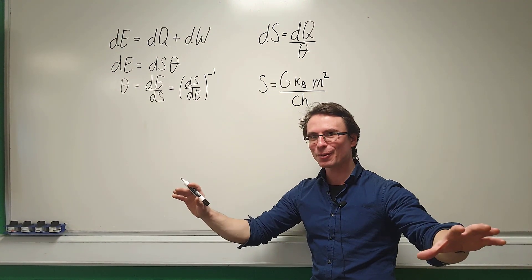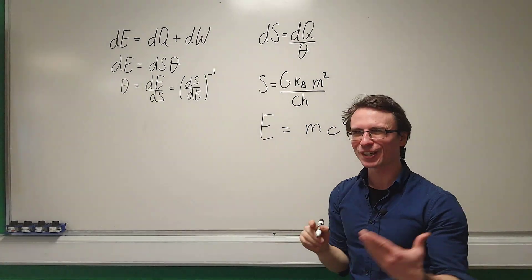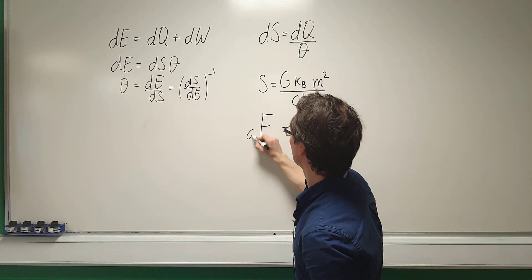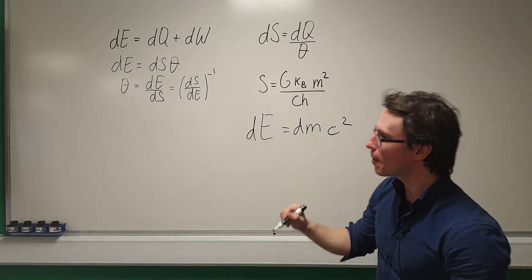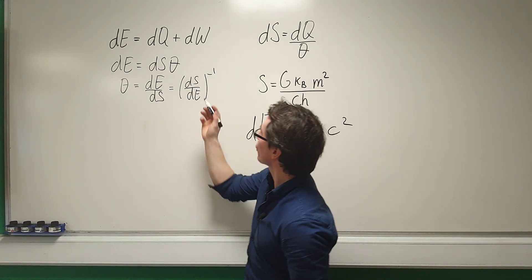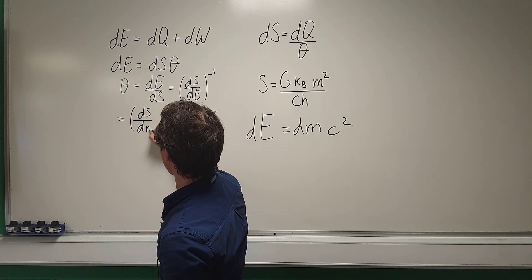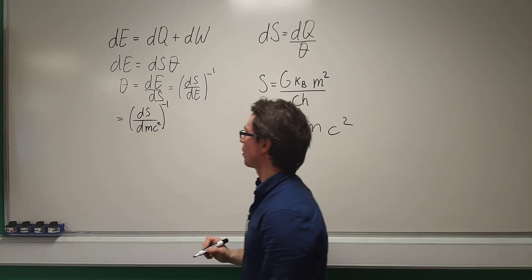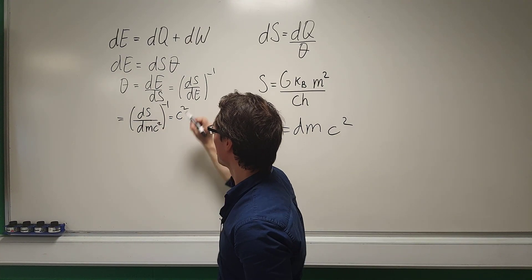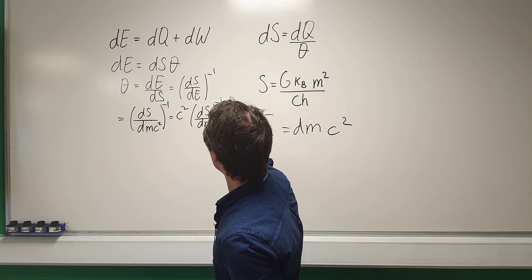Let's use E = mc². I'm going to apply this for a little infinitesimal mass DM, giving a tiny bit of energy DE = c²·DM. Plugging this into our expression for the Hawking temperature, we get (DS / (c²·DM))⁻¹, and taking out the factor of c², we're left with c² multiplied by (DS/DM)⁻¹.